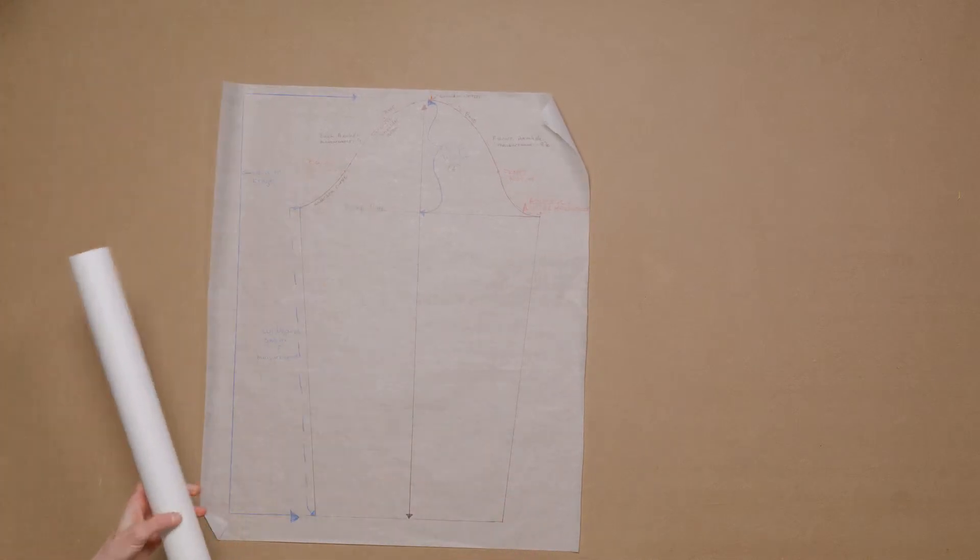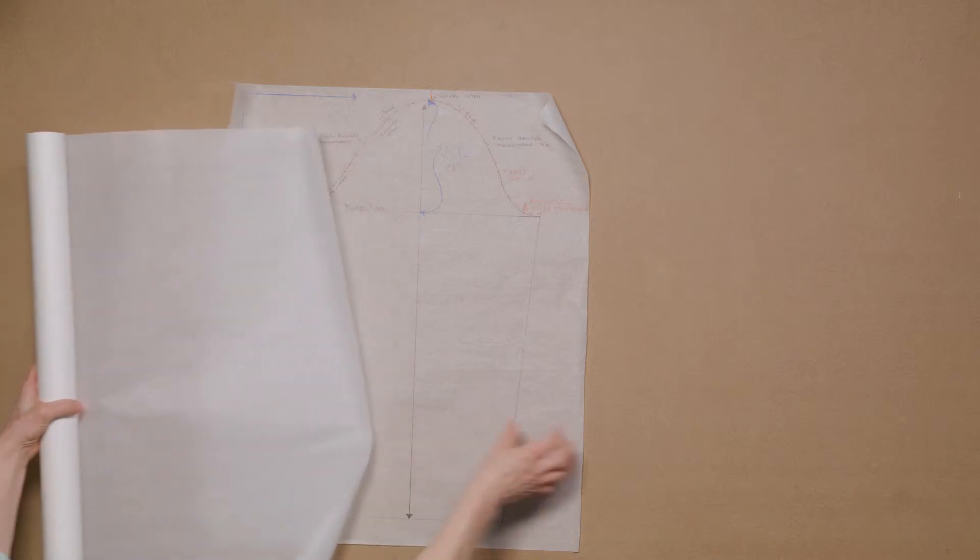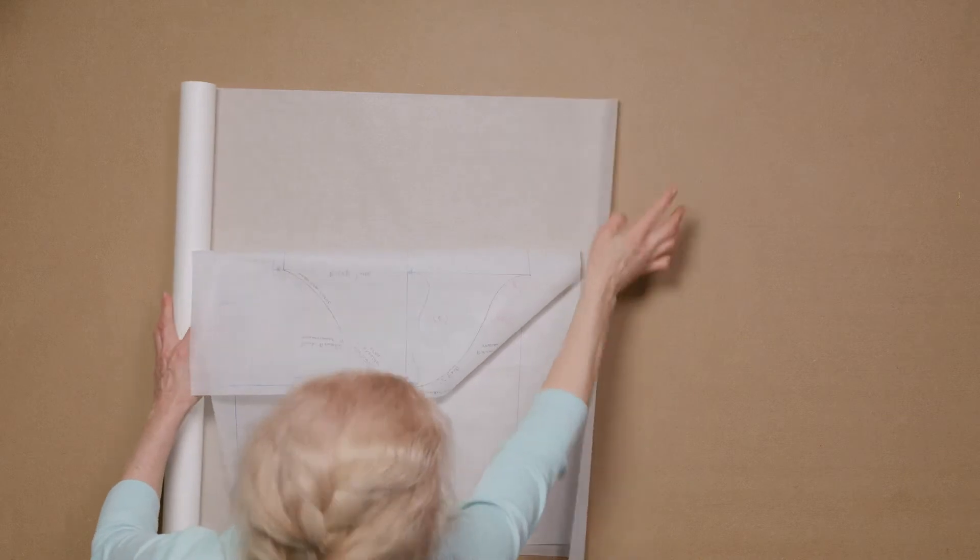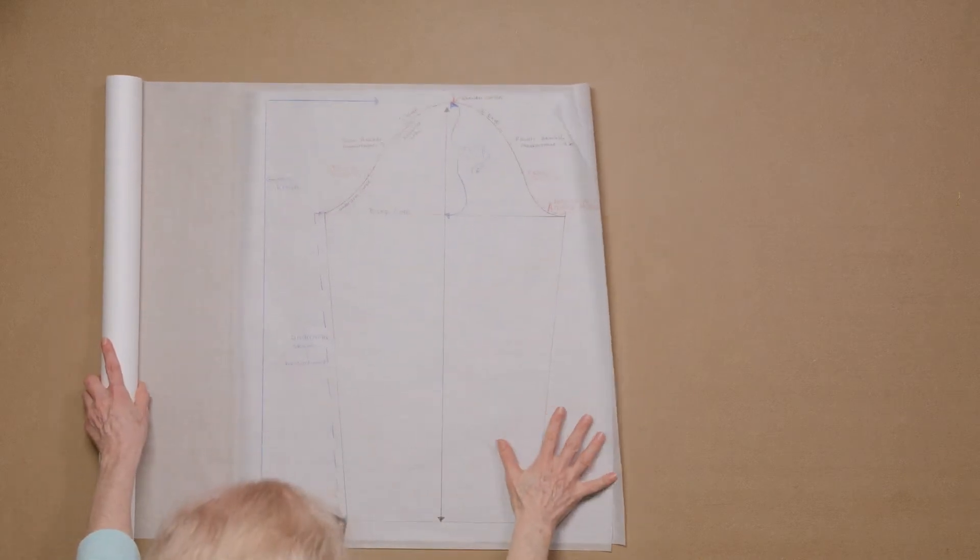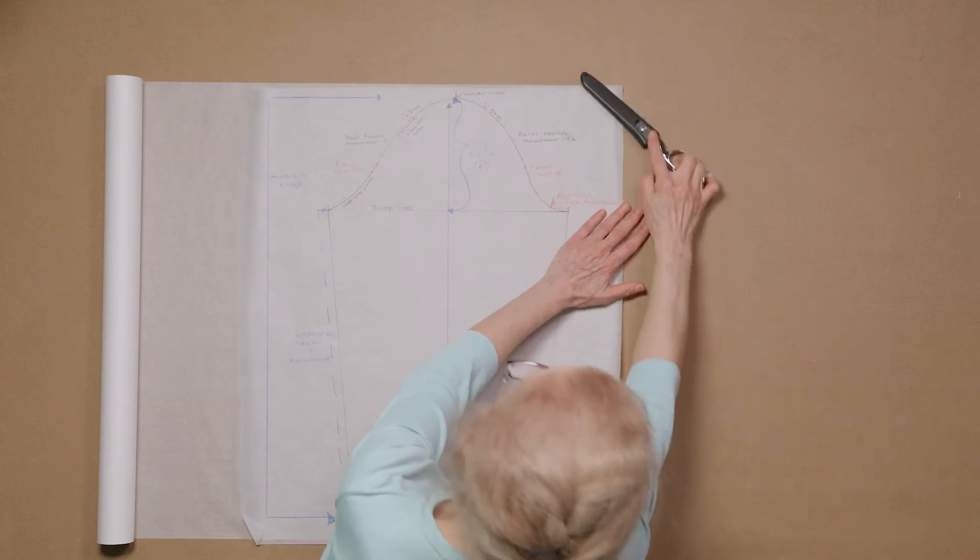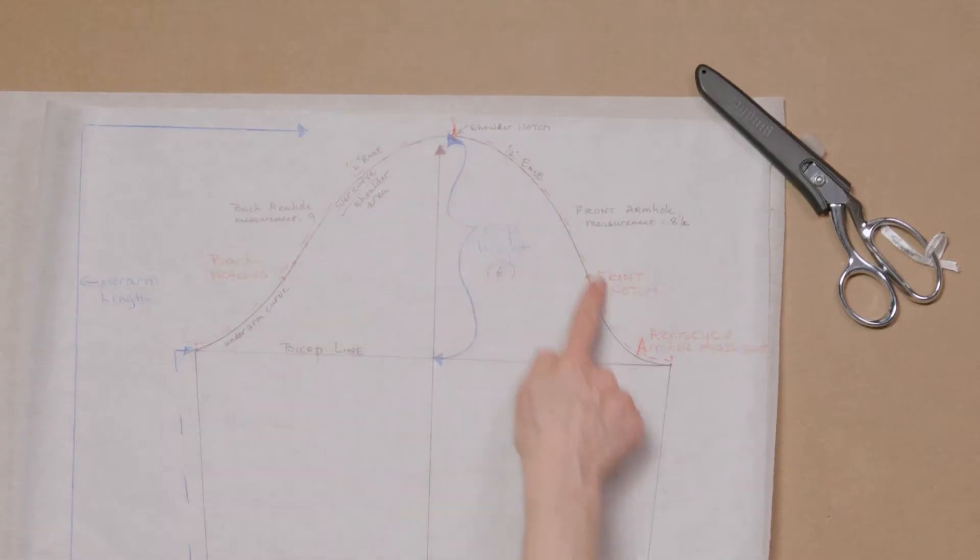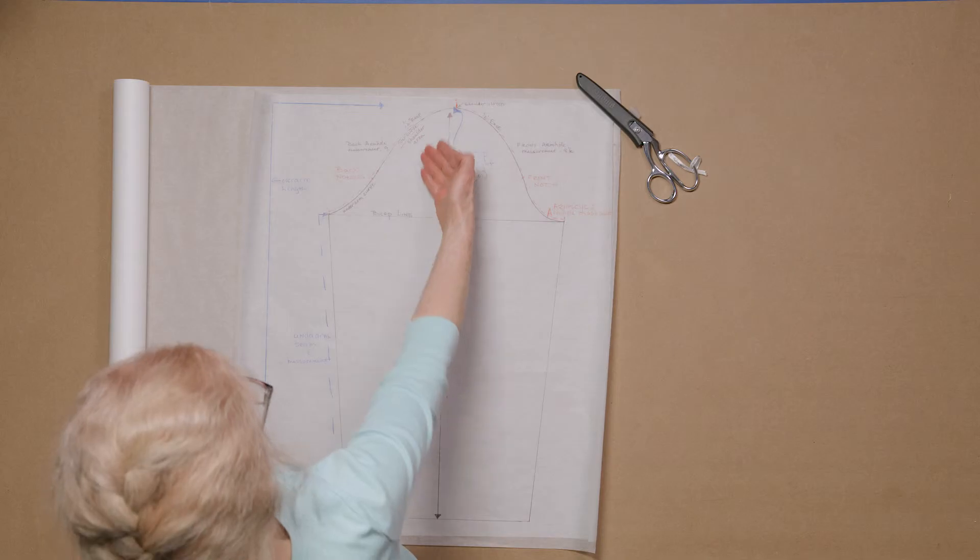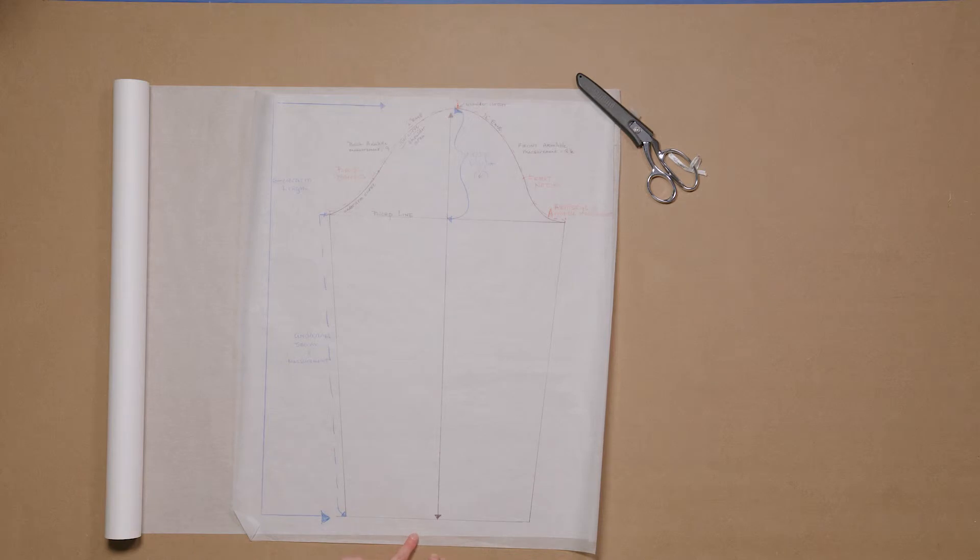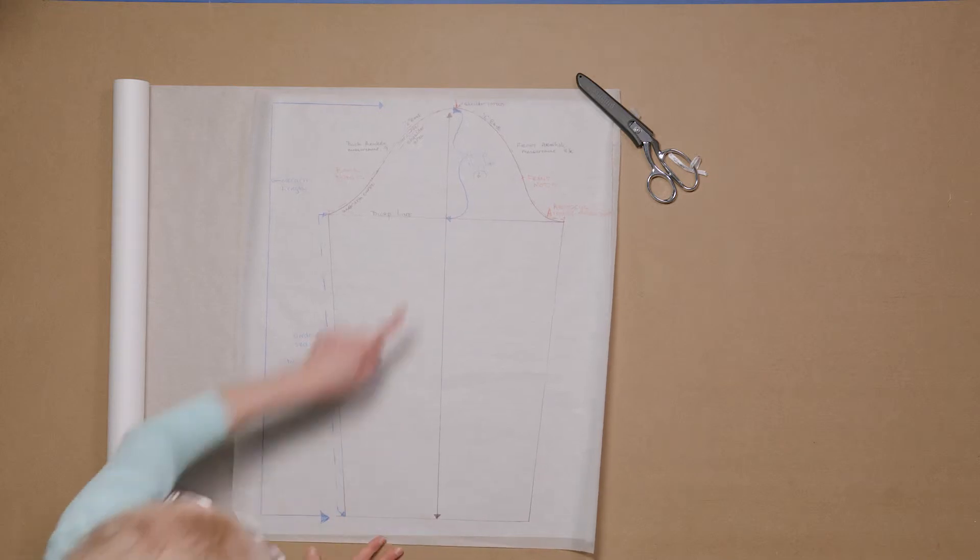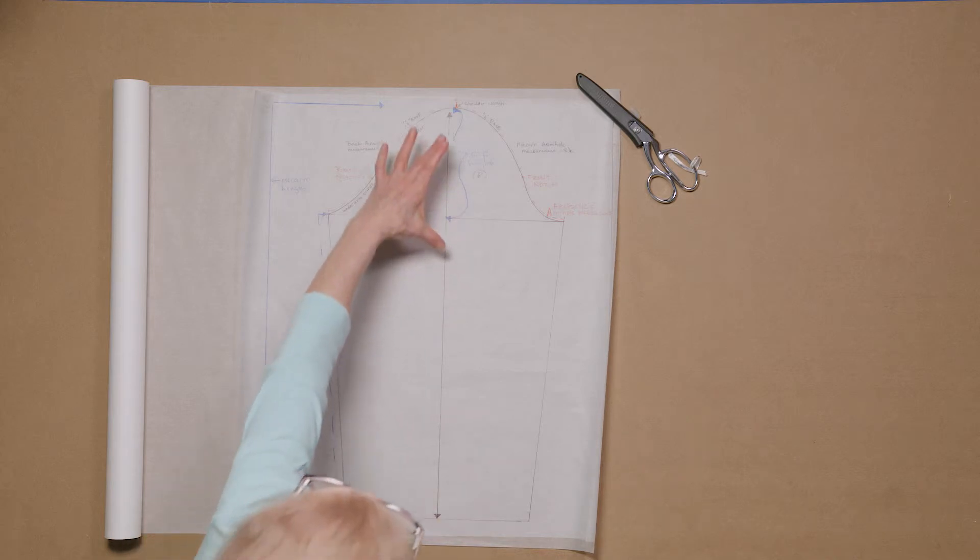This is the basic sleeve. I'm going to put it on this other paper so you can see it a little bit better. And let me discuss with you these different components. We have the entire cap, also called the armscye, A-R-M-S-C-Y-E. It is the armhole measurement. And we also have the cap height. We have the body of the sleeve. This is the over arm length and this is the under arm length. And of course we have the shoulder notch. I'd like to show you the same measurements for the armhole, but with a shorter cap.